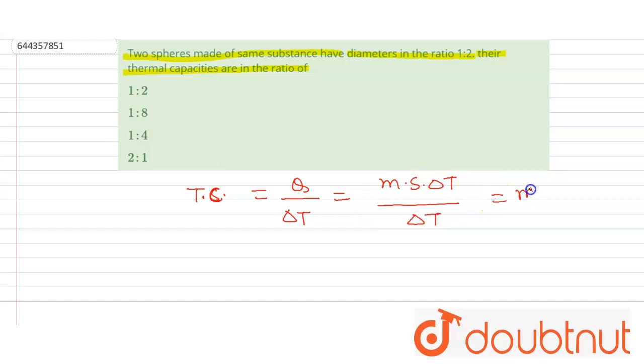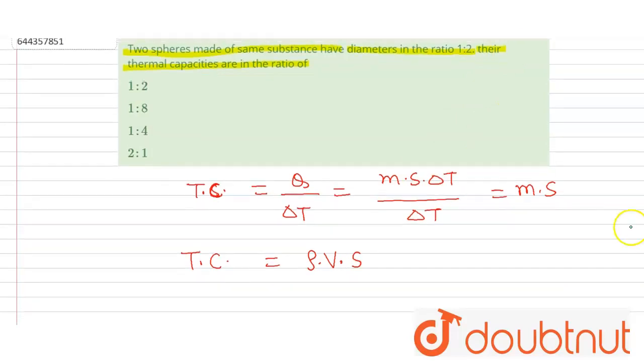Now here m can be written as mass equals density times volume, so the thermal capacity will be equal to ρ into volume into s. For the first substance, or in the question it is given the ratio of the diameter.